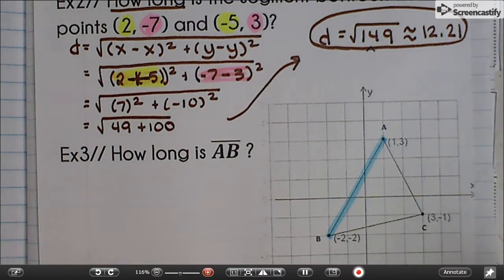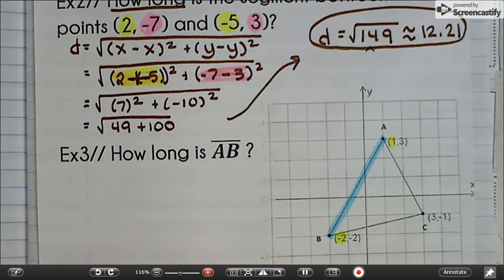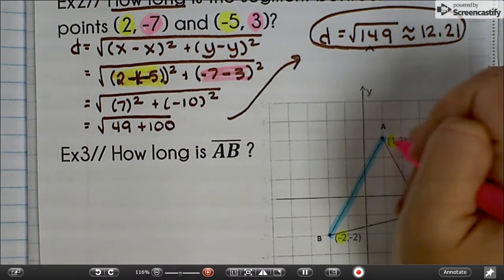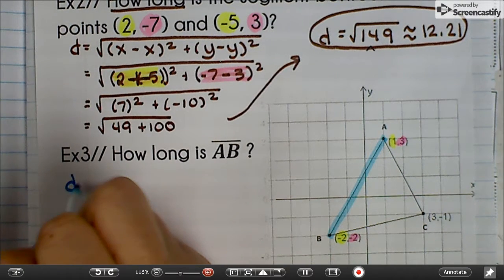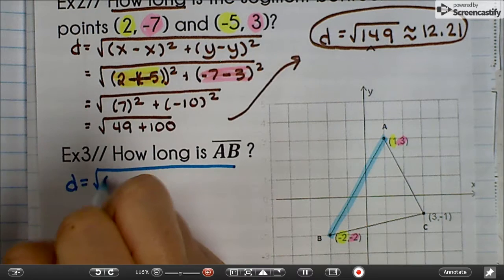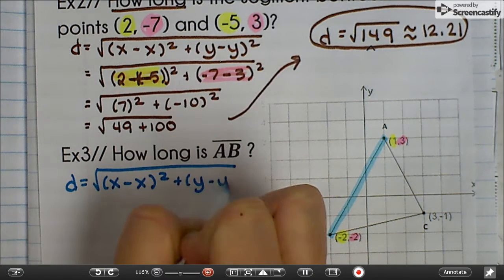We have coordinates here. We have our x's and the y's. And we're going to use the distance formula, which is distance equals the square root of x minus x squared plus y minus y squared.